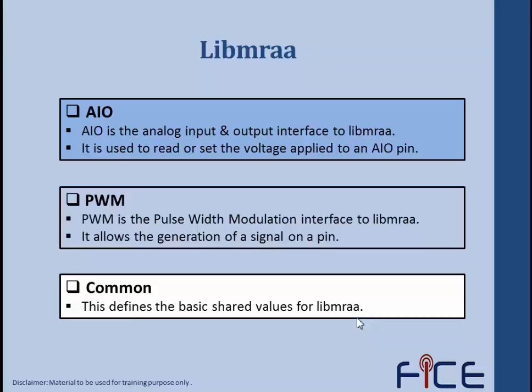PWM is the pulse width modulation interface to libmraa. It allows the generation of a signal on a pin. If we access PWM pin modules in libmraa, we can generate various signals on these PWM pins. On our Galileo board, pin numbers 3, 5, 6, 9, 10, and 11 are reserved for PWM. Common defines the basic shared values of libmraa.